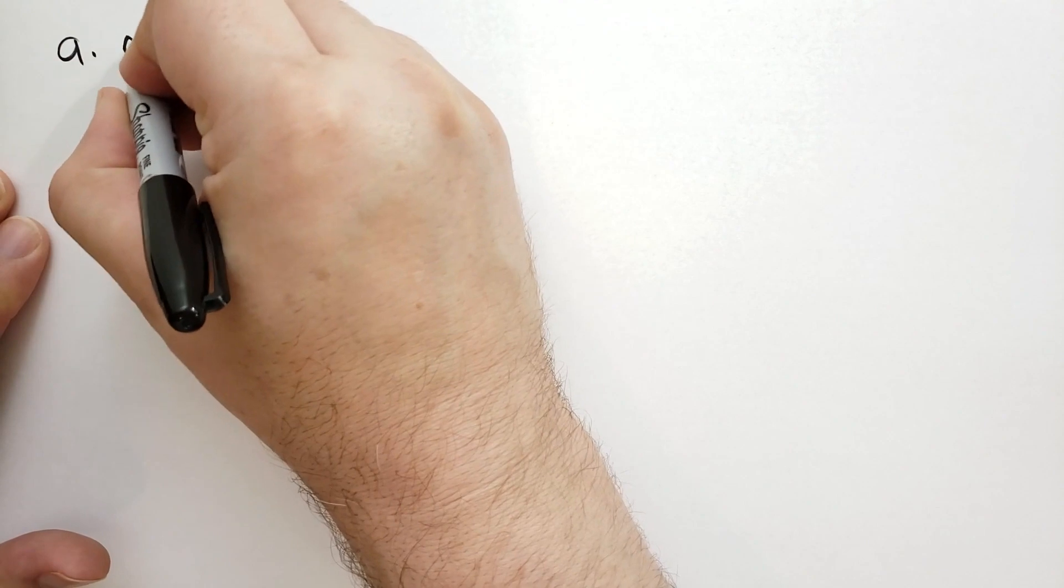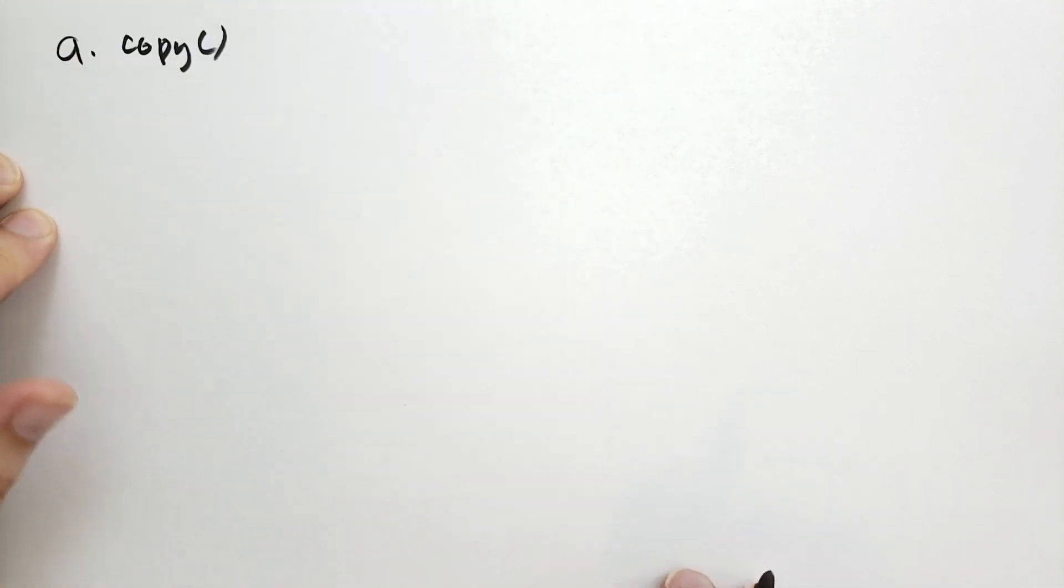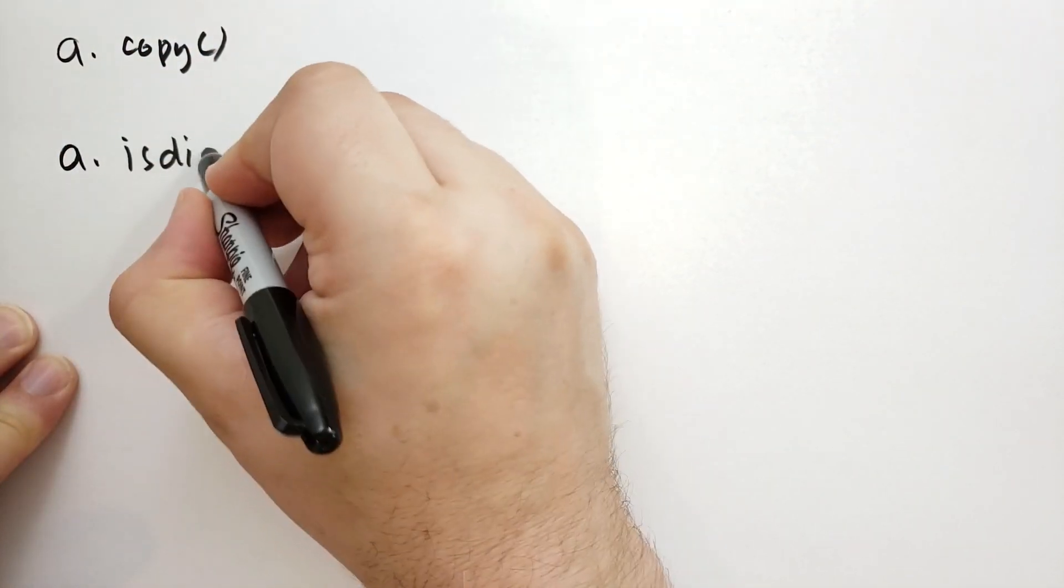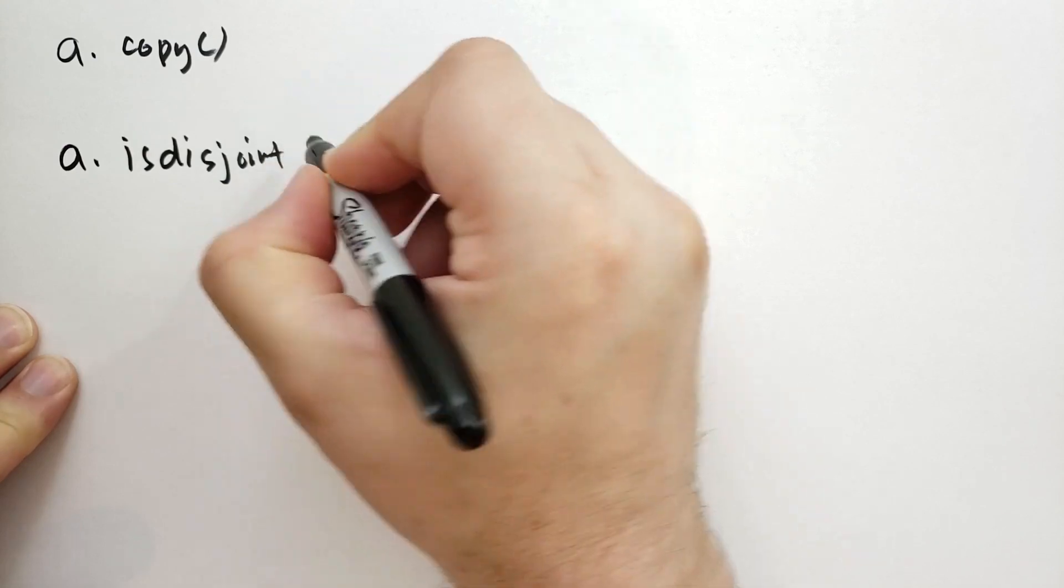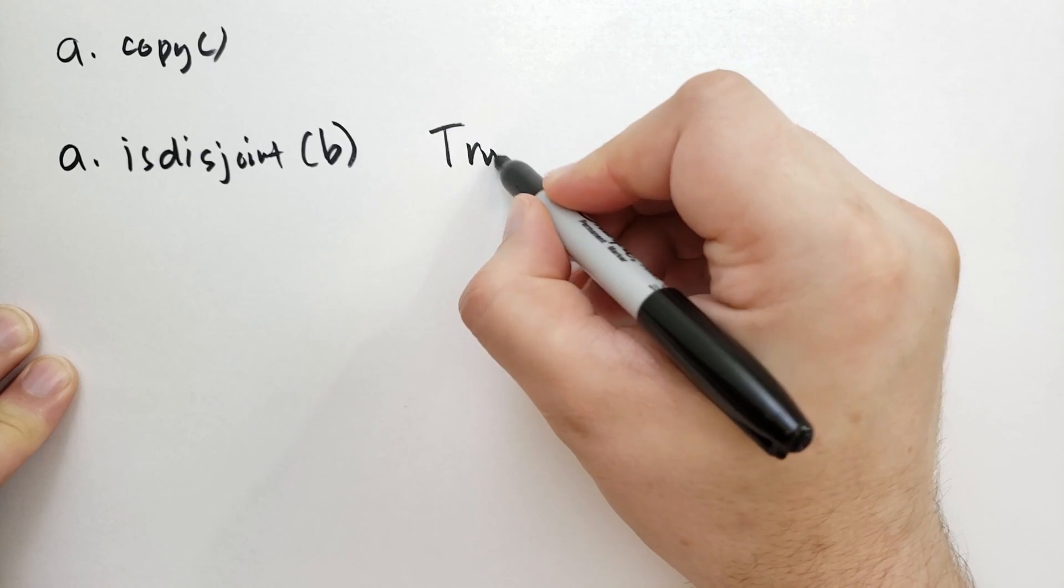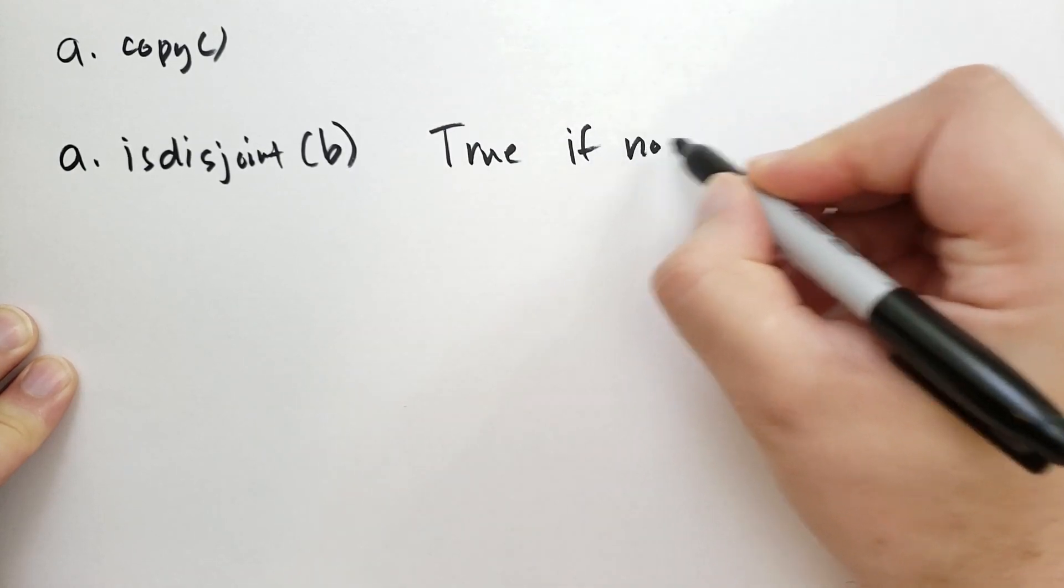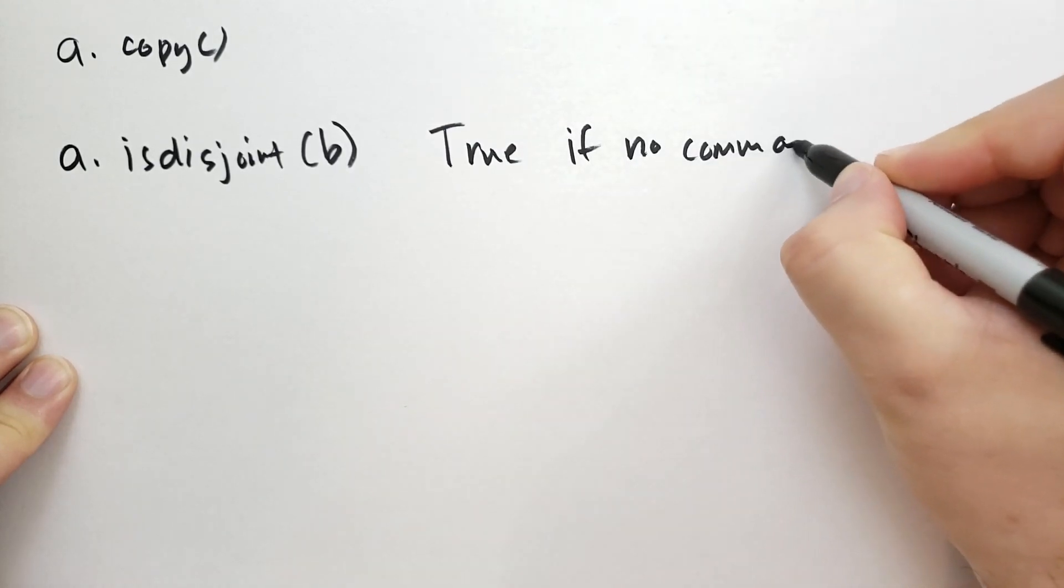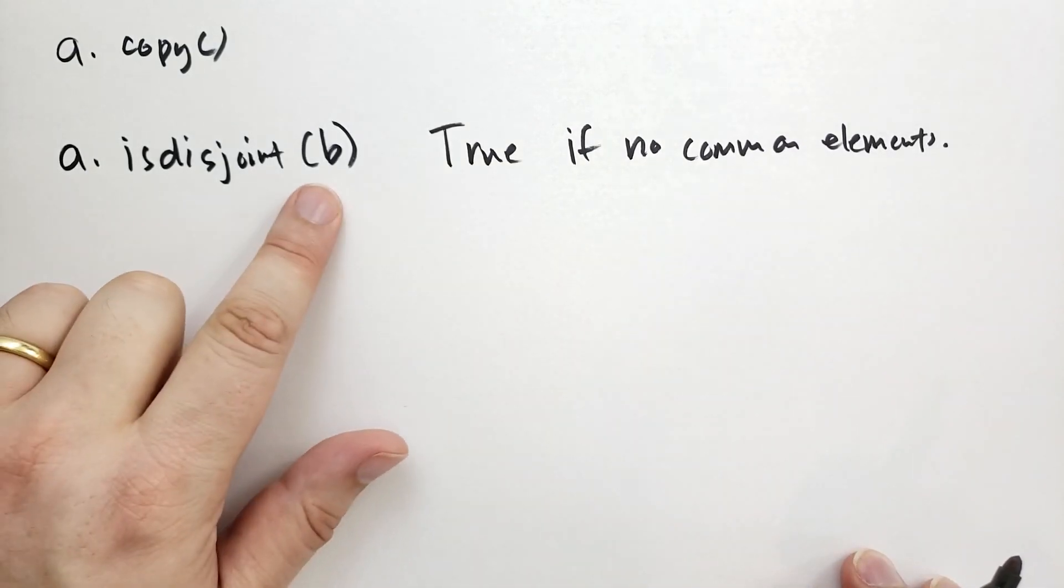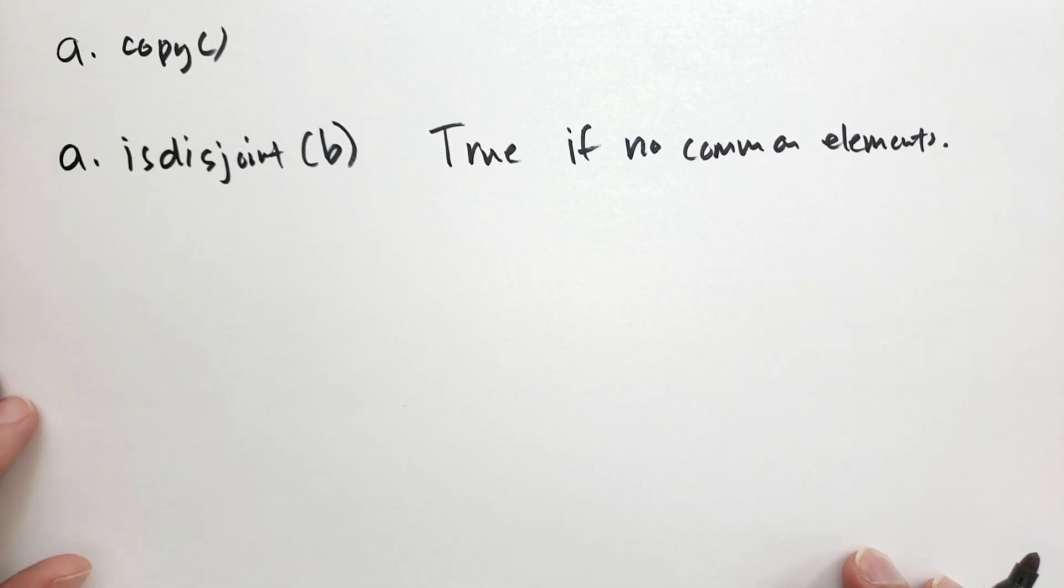There are quite a few methods that you can have on a set. The first one I'll tell you about is copy. This will create a copy of the set or frozen set. OK, then we have a bunch of tests we have is disjoint. And what this returns is true if there are no common.